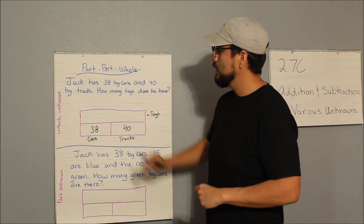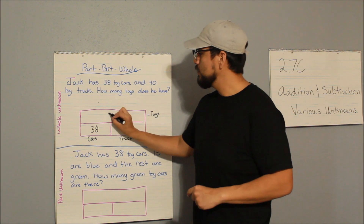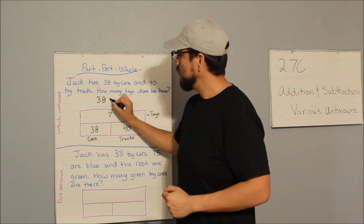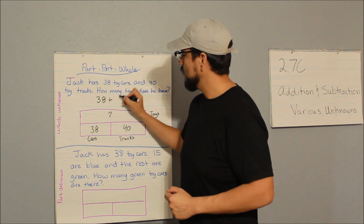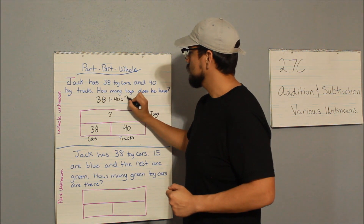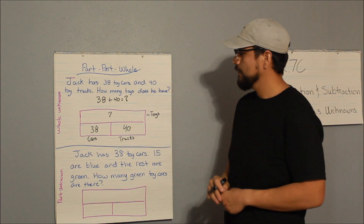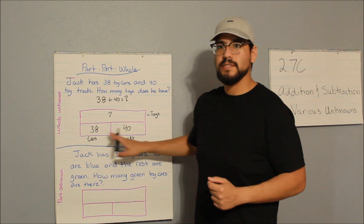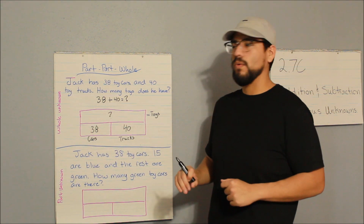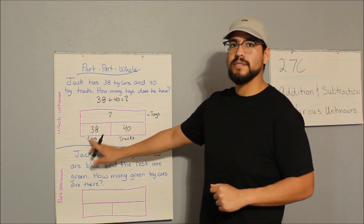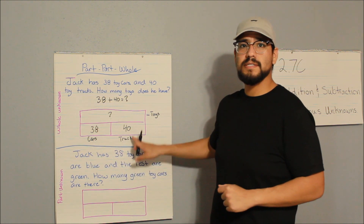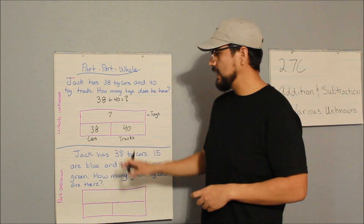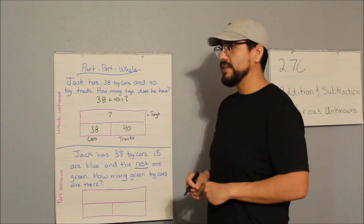My whole is unknown, which means my equation is: 38 plus 40 equals question mark. My whole is for toys, but I have parts given to me and I have to solve for the whole. My part for cars is 38, my part for trucks is 40, and my whole will be the sum of those.